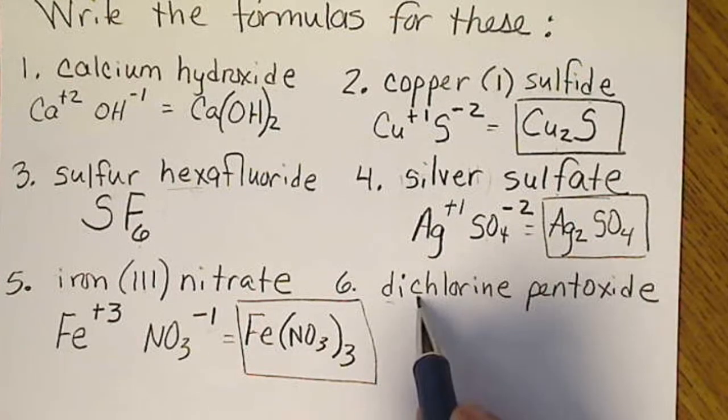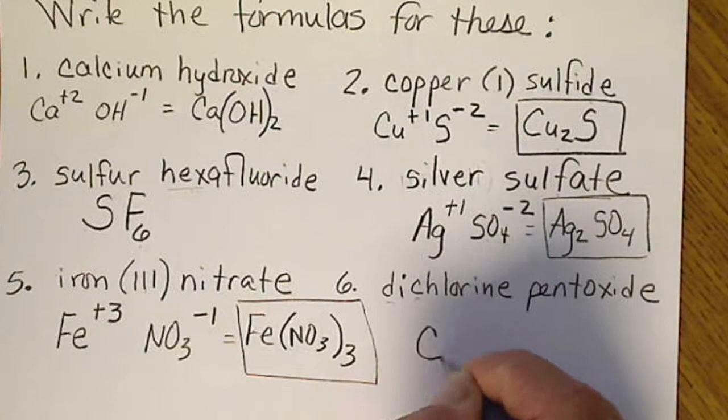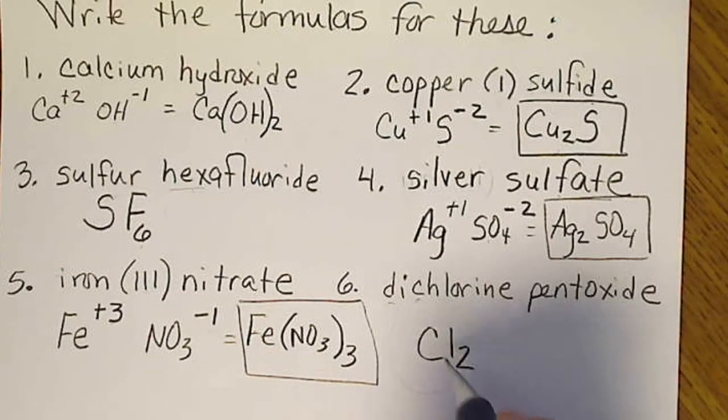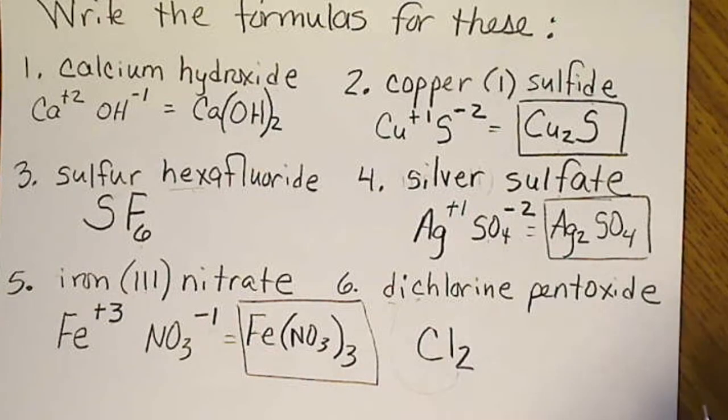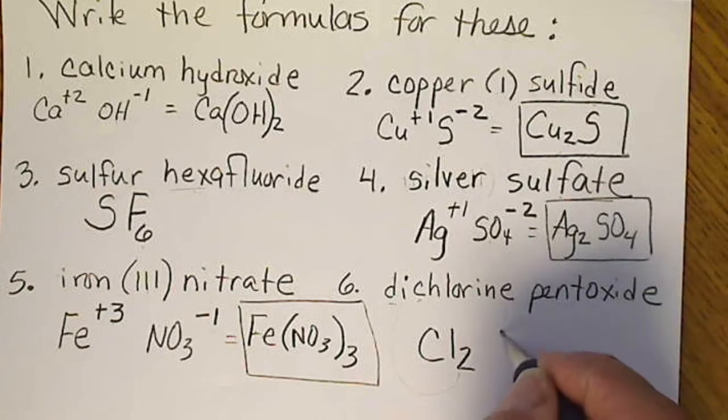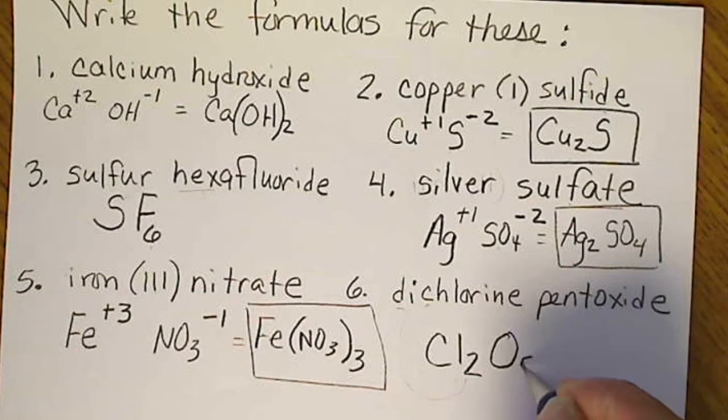Dichlorine pentoxide: di means two, so there are two chlorines. This is not a charge, so we use Greek prefixes because it's nonmetal-nonmetal, we don't consider charges. Pent means five, oxide is O.